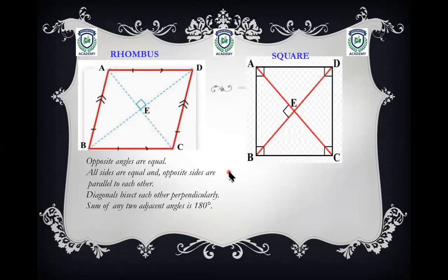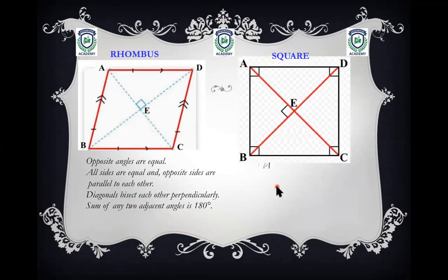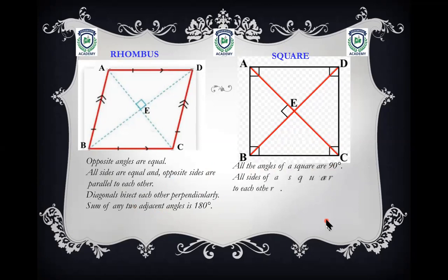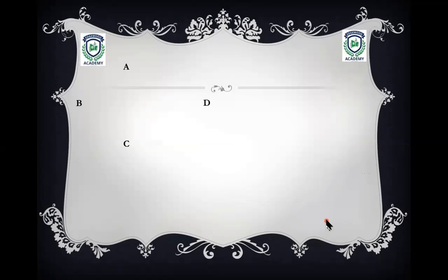The square looks similar to the rhombus but they differ: all angles of a square are 90 degrees — angles A, B, C, and D are each 90°. All sides of a square are equal and parallel to each other, and the diagonals bisect each other perpendicularly, meaning where the diagonals meet there is 90 degrees.